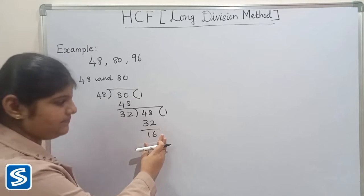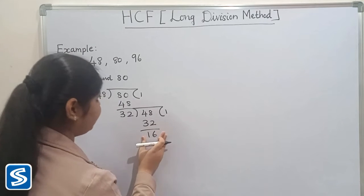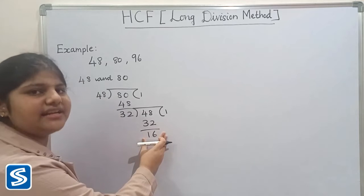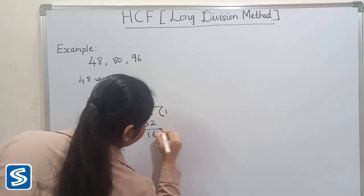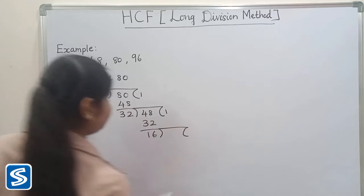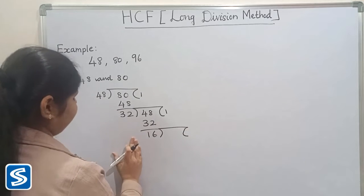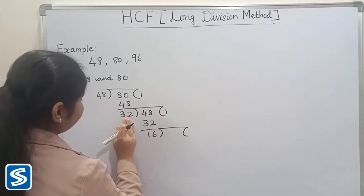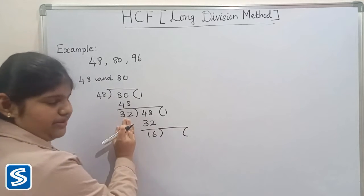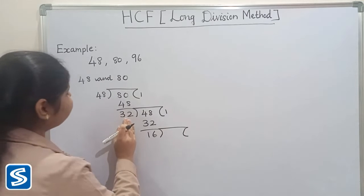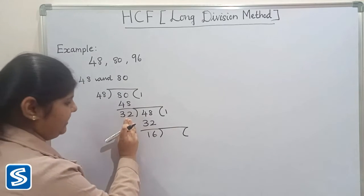Now we have to consider the remainder as the new divisor and the previous divisor as the new dividend. Here the previous divisor is 32, so now we have to consider 32 as our new dividend.